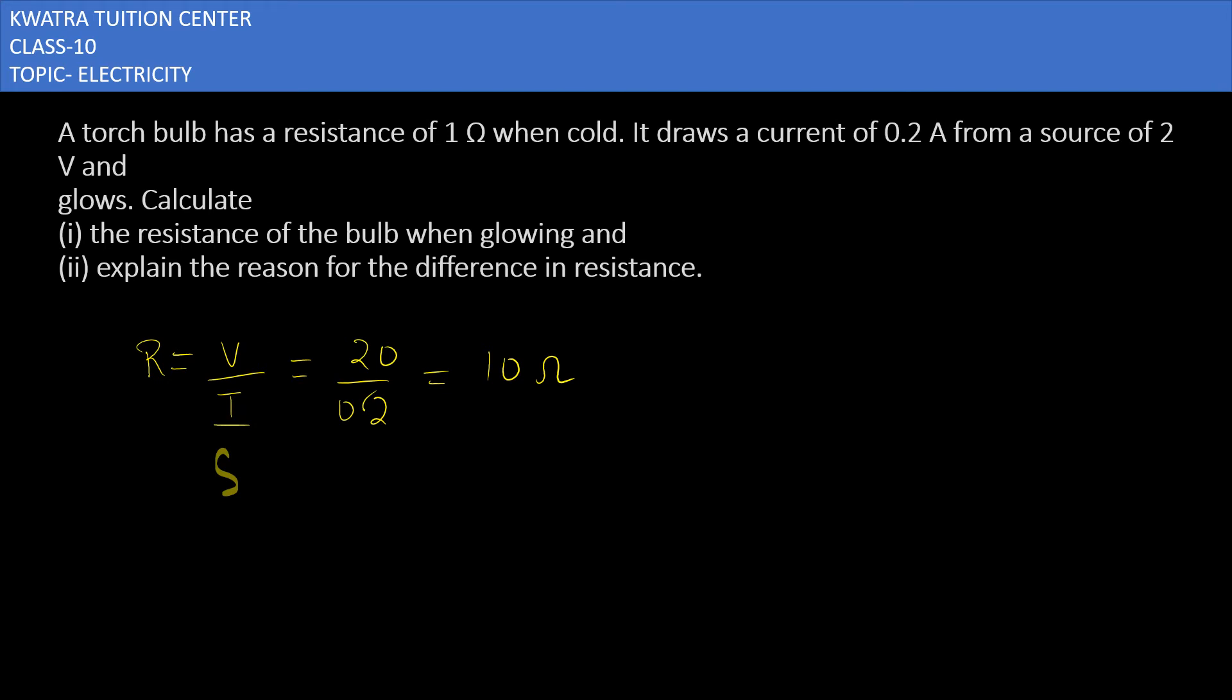Explain the reason for the difference in resistance. When it is glowing, the resistance is 10 ohm. How much was it when it was cold? It was 1 ohm. So why is this happening?